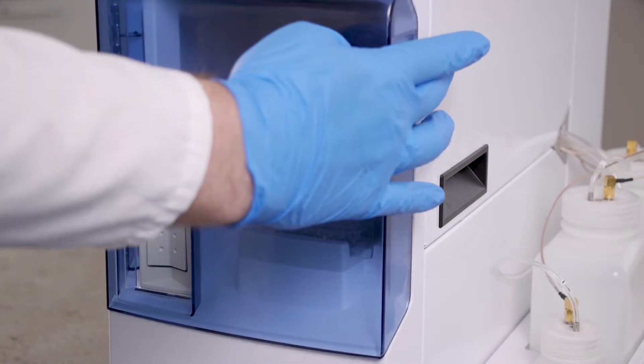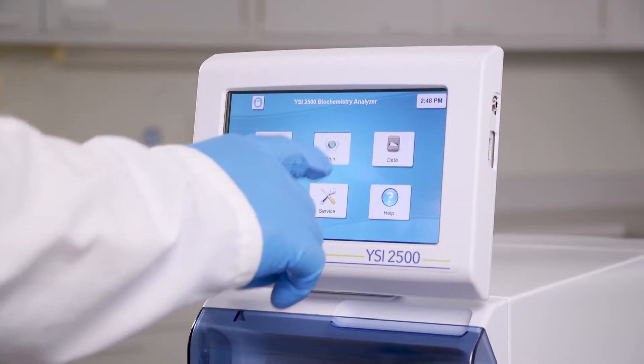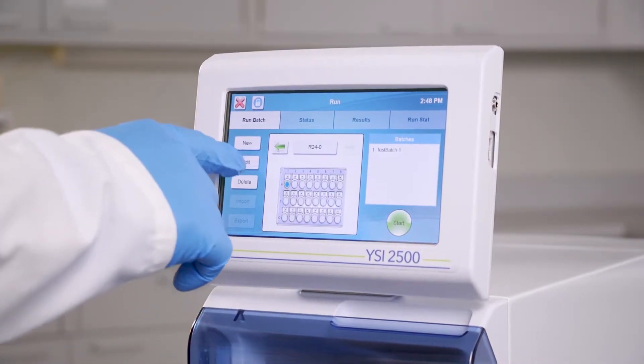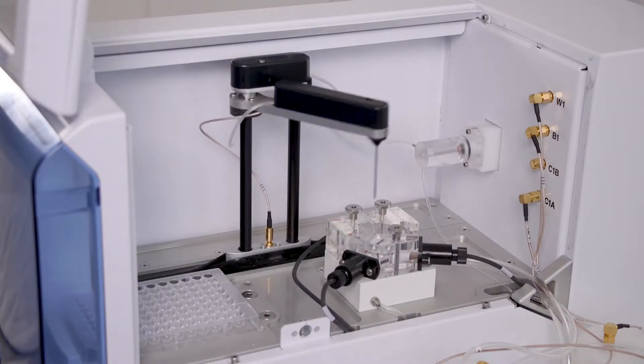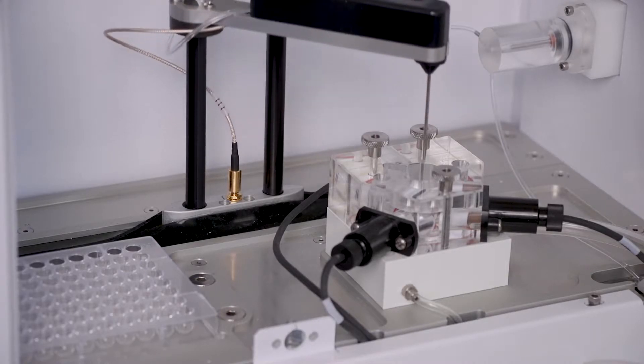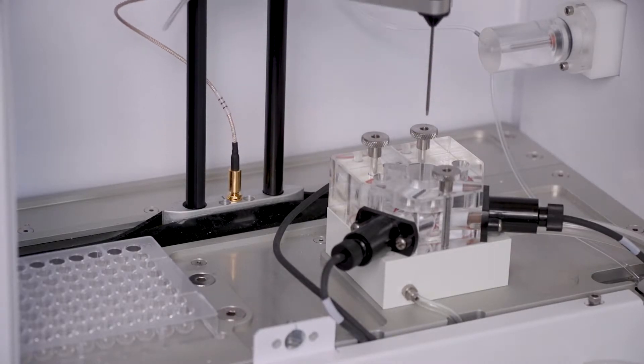And like the YSI-2900 Biochemistry Analyzer, the YSI-2500 Glucose Lactate Analyzer offers full sample automation for up to 96 samples. Small sample sizes ranging from 10 to 50 microliters.